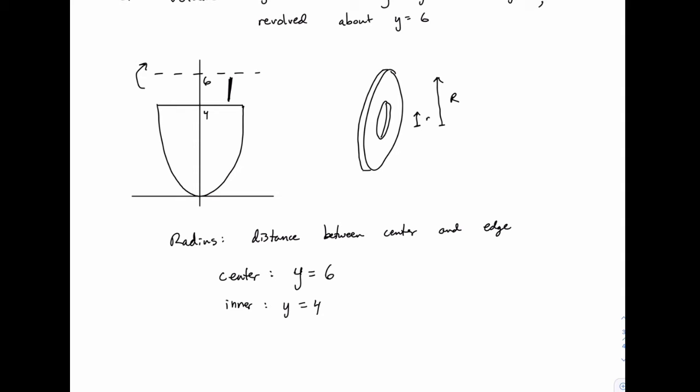So be careful with this, don't think in terms of upper function and lower function. Think of the one that's closer to the center of rotation and the one that's further away. So the inner edge is defined by the straight line here. Because that one's closer to this line of rotation, y equals 6.